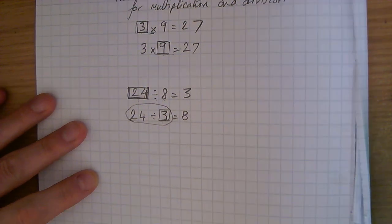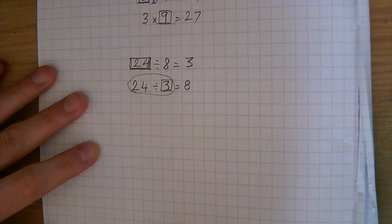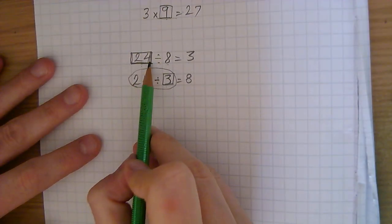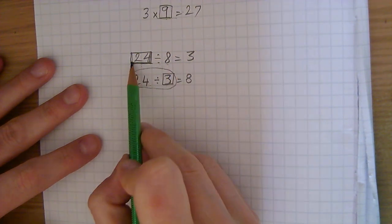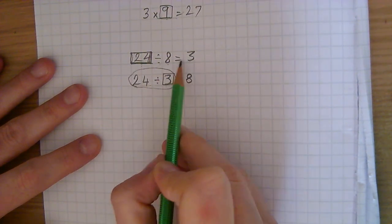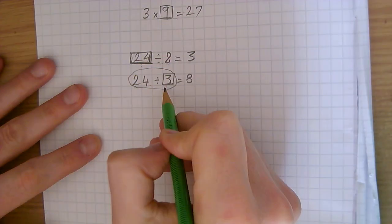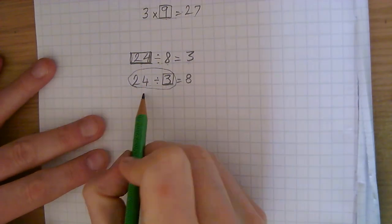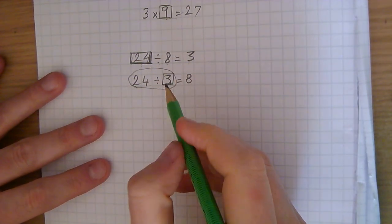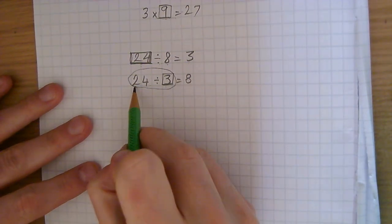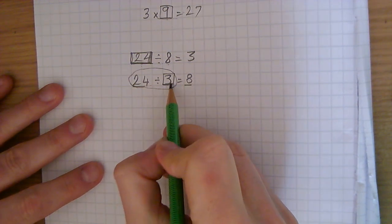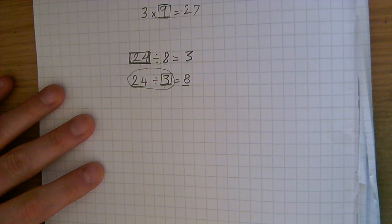However, with division questions, we only do the inverse if the missing number is first in the number sentence, because that will be the biggest number — so we do 8 times 3. But if the missing number is second in the division number sentence, we do not multiply, we do not do the inverse — we do 24 divided by 8. Where the missing number is second, it's not an inverse question.